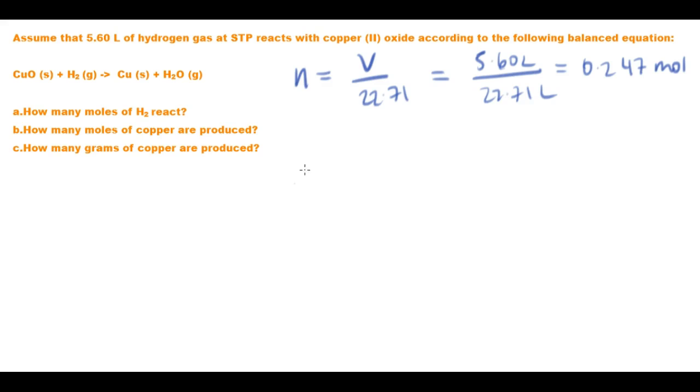How many moles of copper are produced? The number of moles of copper will just follow the molar ratio. So the number of moles of copper according to our molar ratio equals the number of moles of hydrogen. Therefore, the number of moles of copper is going to be 0.247 moles.